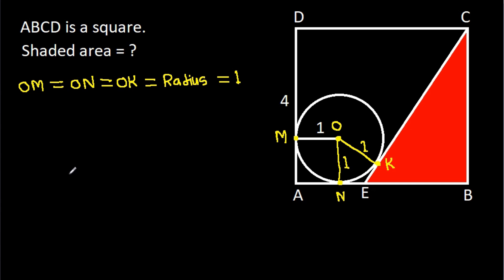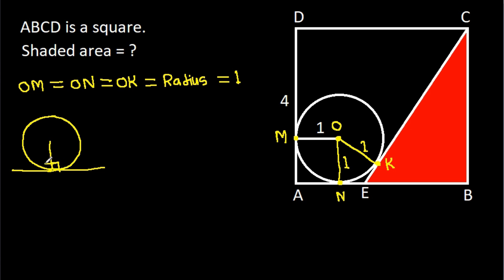In any circle, the radius and tangent are perpendicular to each other. So this angle will be 90 degrees and this angle will also be 90 degrees.